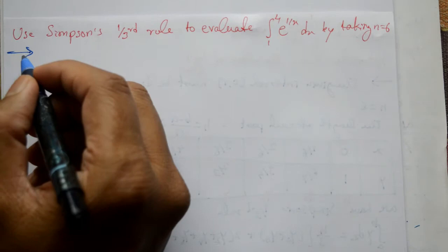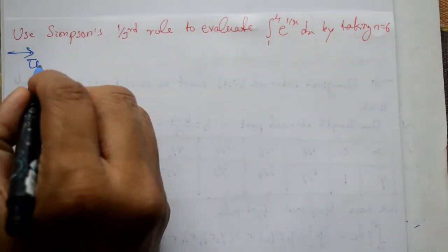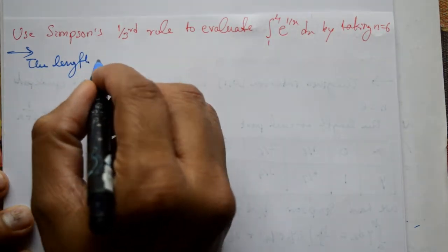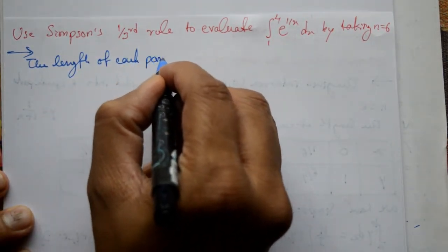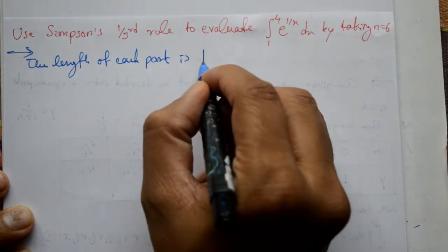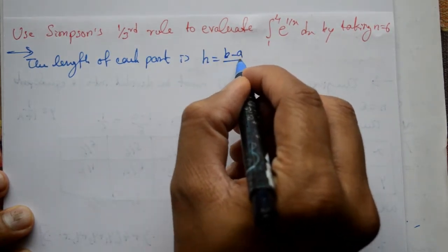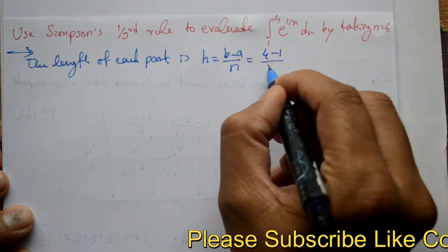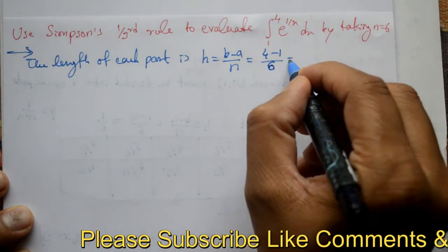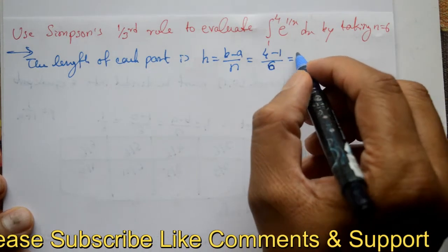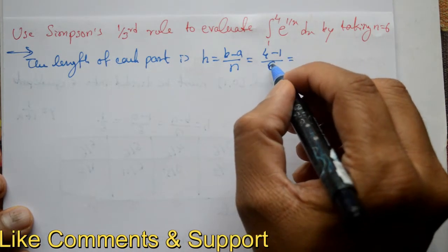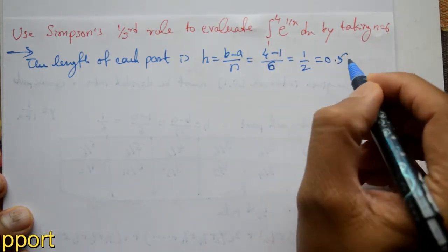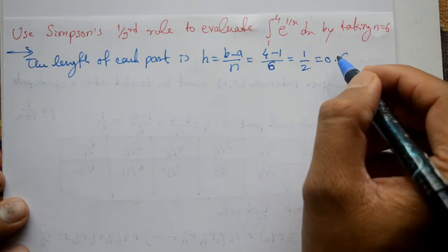Now, solution will come. So first, step length use, length of each part, step size. Length of each part is h equals b minus a divided by n, so 4 minus 1 divided by 6. So 3 by 6 or 1 by 2, 1 by 2 or 0.5. h is equal to half and 0.5.